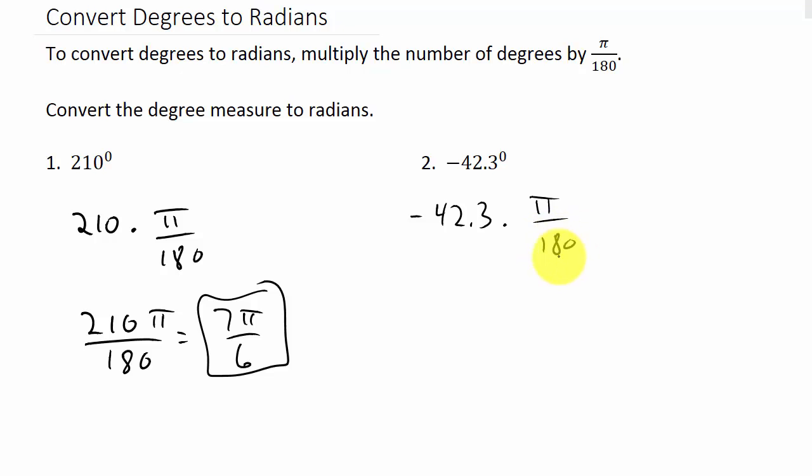Basically just punch it in your calculator, negative 42.3 times pi, hit enter, and then divided by 180. That's going to give you negative point 738, and we'll round it to four decimal places. That would be your angle.